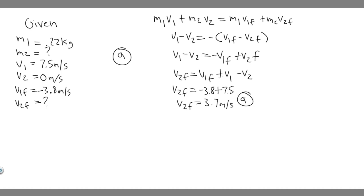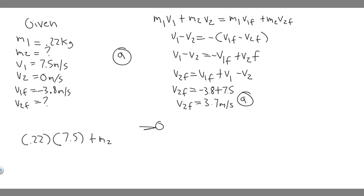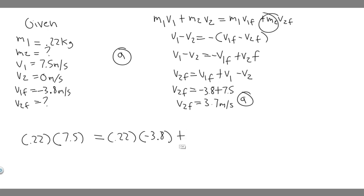Now for Part B, the mass of the target ball. Since the elastic formula doesn't contain mass, we use the conservation of momentum equation. Plugging in: 0.22 × 7.5 plus M2 × 0 equals 0.22 × (-3.8) plus M2 × 3.7. Since V2 = 0, that term drops out.